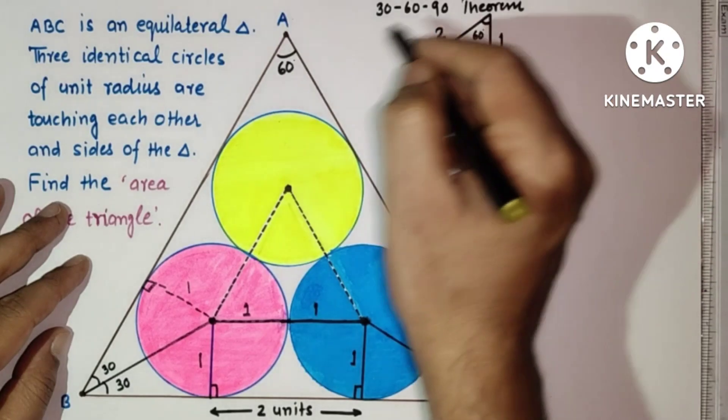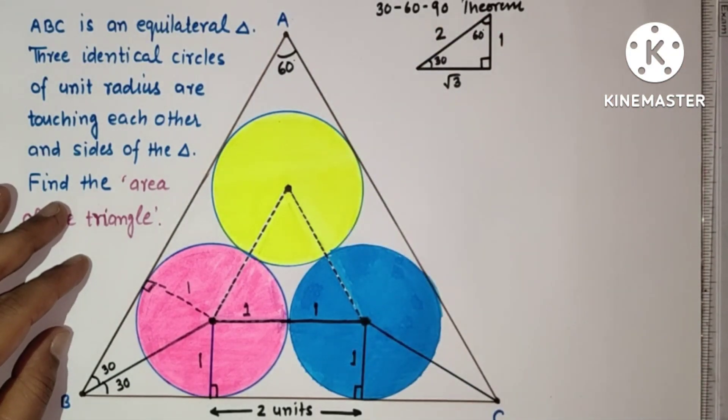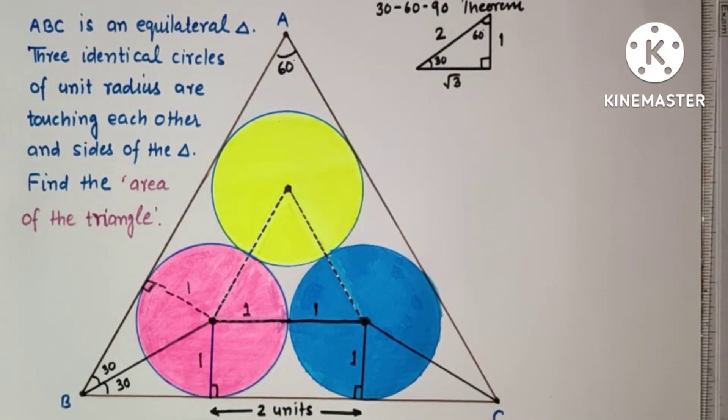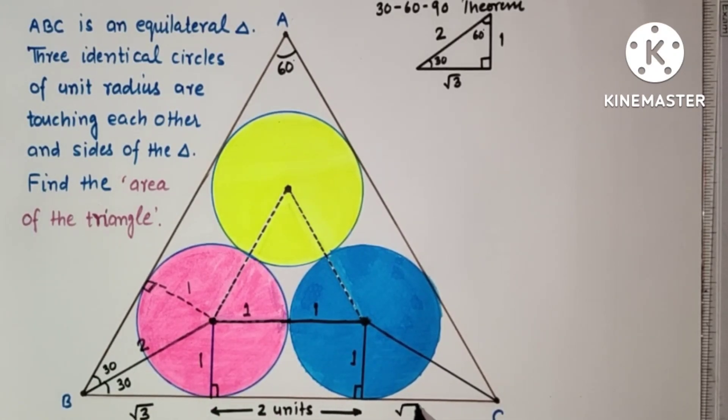So using this 30-60-90 theorem, this is 1, so this will be 2, and this is root 3. If you don't want to use 30-60-90 theorem, you can use trigonometry and sin 30 is 1 upon 2, so 1 upon 2, and similarly this will also be root 3.